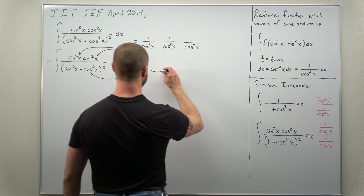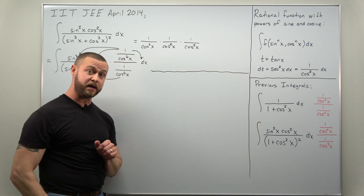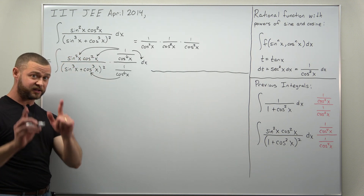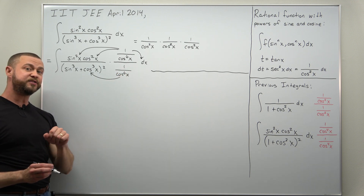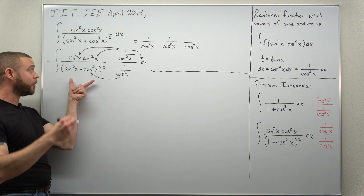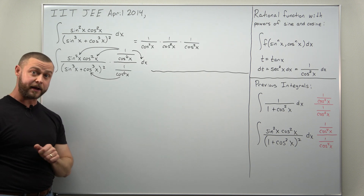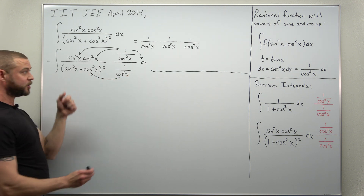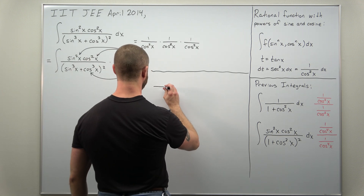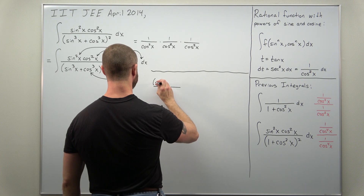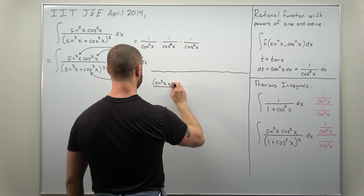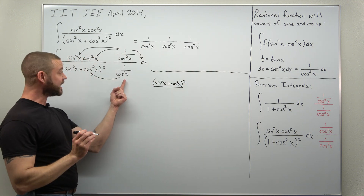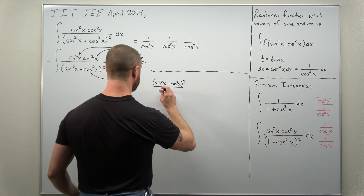Let's work out how 1/cos⁶(x) simplifies the denominator. There are always several equivalent ways to simplify this. I like to think of 1/cos⁶ as it is; you might prefer to factor out cosine cubed and work with it that way — it's all the same. Let's take this 1/cos⁶ and multiply it into the denominator. Writing (sine³(x) + cos³(x))² with that factor of 1/cos⁶(x) in the denominator.